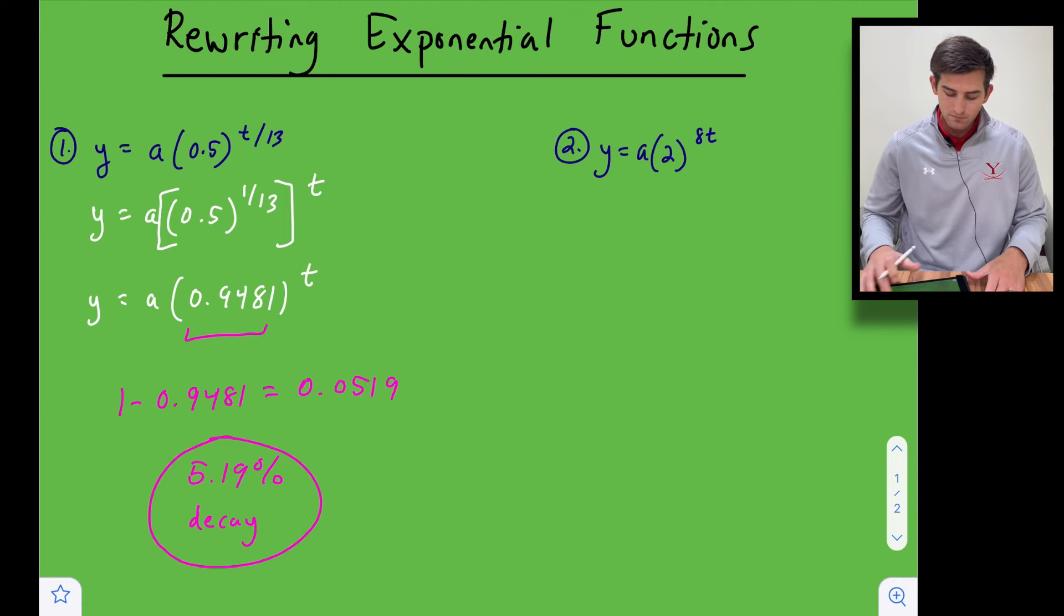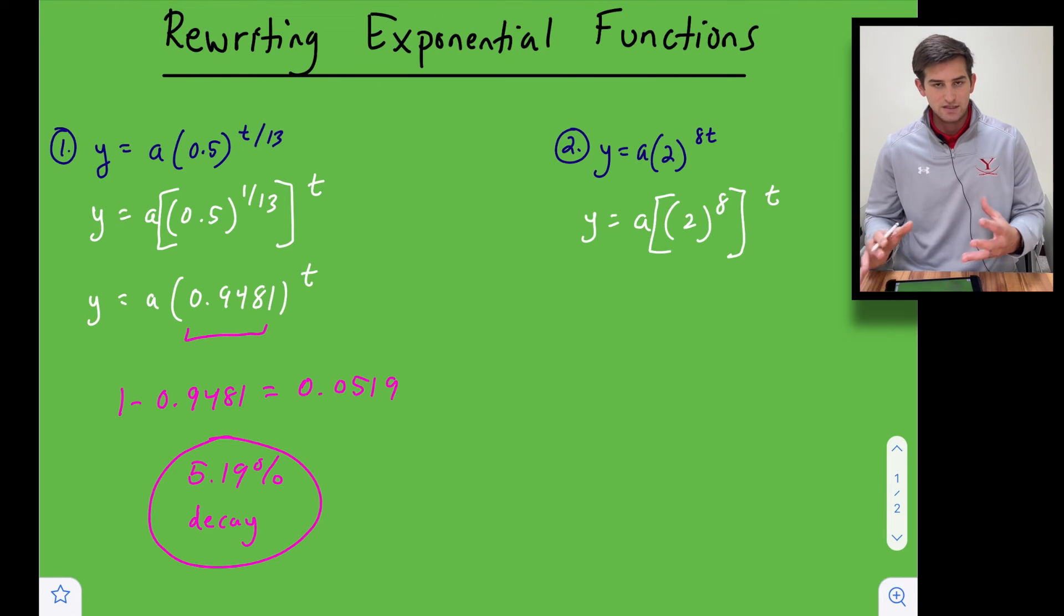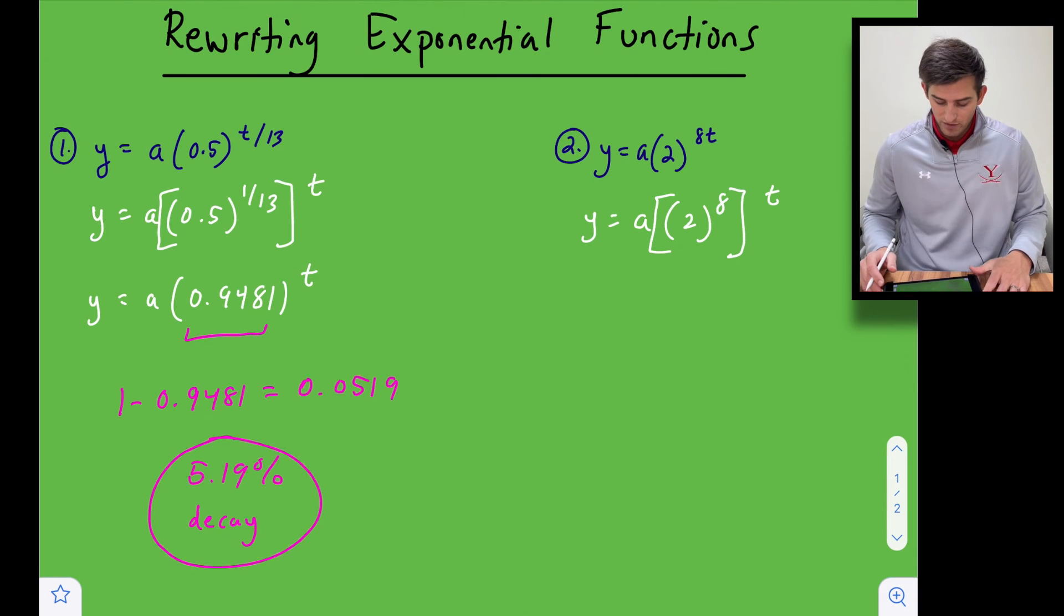Okay, all right, now let's take a look at number two. We have y equals a times two to the 8t power, so we're gonna do the same thing and break this apart. So y equals a times two to the eighth power and then we're going to raise this to the power of t. So once again if we saw that we could simplify that to being a power of 8t, kind of undoing that property of exponents there.